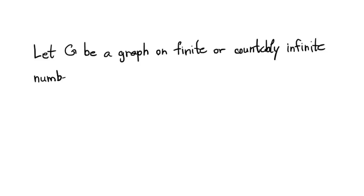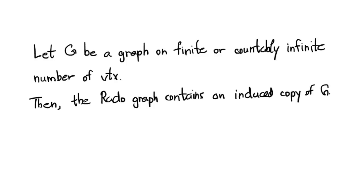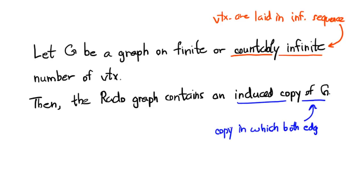Let G be any graph on finite or countably infinite number of vertices. Then, the Rado graph contains the induced copy of G. Here, countably infinite just means that the vertices are laid out in an infinite sequence, and induced copy means that both edges and non-edges of G are copied into the Rado graph.